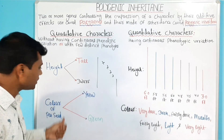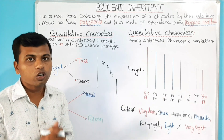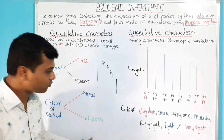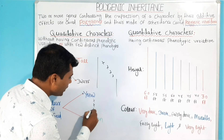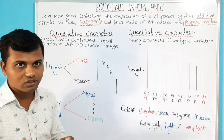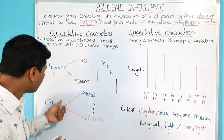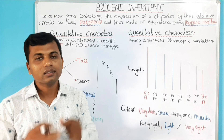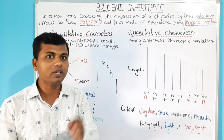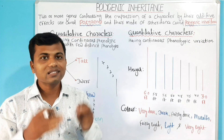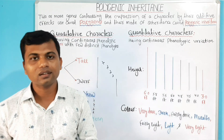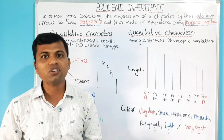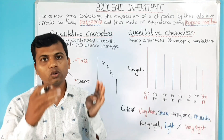Similarly, Color of the Pea Seed. Here, Color of the Pea Seed is showing only two phenotypes: Yellow and Green. In between Yellow and Green, there is no other form of color present. So, the color of the Pea Seed is a qualitative character. Being the qualitative characters are having only few phenotypes, a single gene with two alleles or a single gene with multiple alleles is sufficient to control a qualitative character.